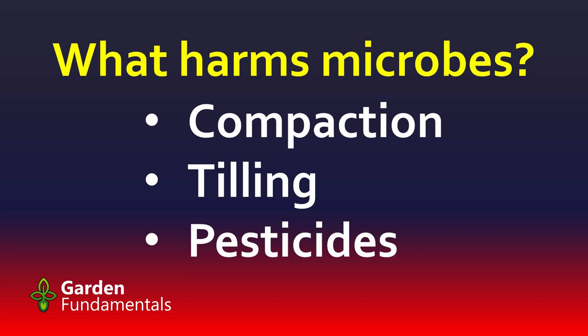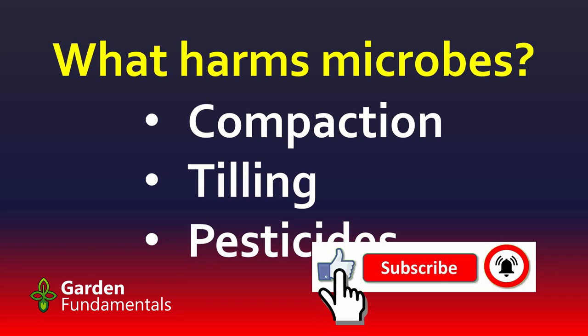Tilling can also do a lot of damage. Tilling is very popular — everybody goes out in the spring and tills their vegetable garden. That actually doesn't make a lot of sense. It doesn't loosen the soil; it actually makes it worse because it decreases aggregation, destroys the soil structure, and also destroys all the fungi. So you have fewer microbes and you've destroyed the structure that your soil had.